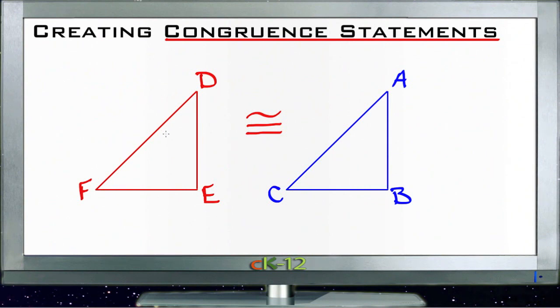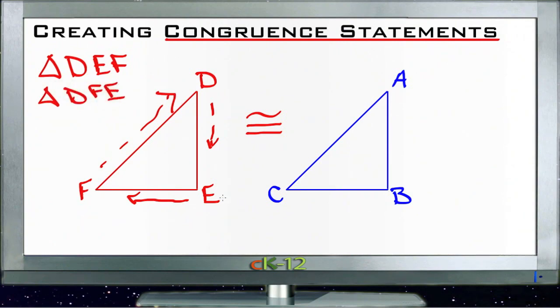If I start with my left-hand triangle, I could describe it as triangle DEF by going around in this direction, or I could describe it as triangle DFE by going around in the opposite direction.